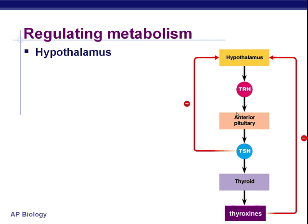Here's how it works. The hypothalamus — part of your brain, it's nervous tissue — is right at the top of our flow chart. If it is detected that your body needs activity from the thyroid gland, the hypothalamus will begin secreting TRH, which is TSH releasing hormone.